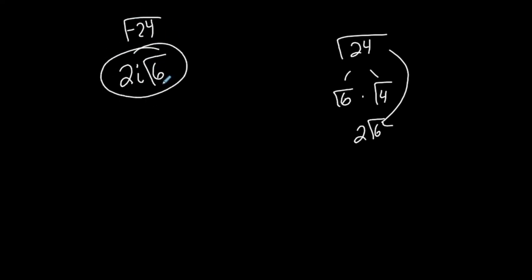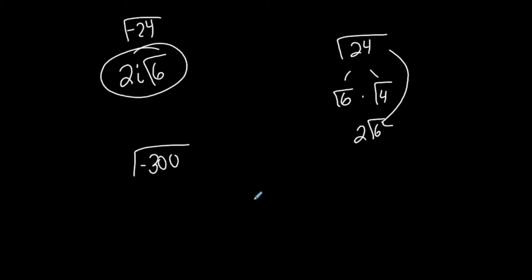Simplify the square root the same way as before, and then that negative just becomes an i in the front. We typically write it in this form — with i in front of the square root — so we don't assume anything is under the square root that isn't supposed to be there.